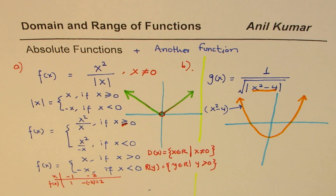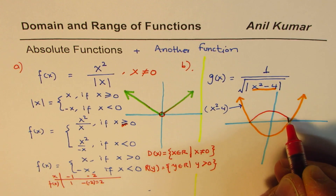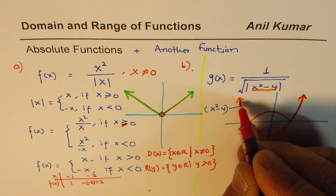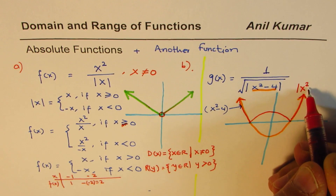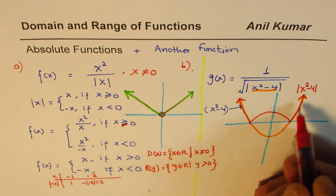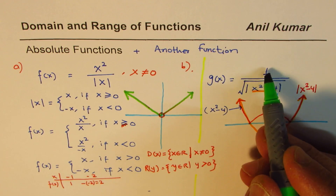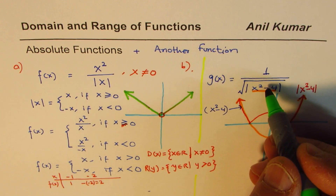Now, if I take the absolute value of this function, the negative part becomes positive. So the graph is reflected upward — this is the absolute value of x squared minus 4. It is always positive. The x-intercepts are at x = −2 and x = 2, and the vertex was at y = −4, which now appears at y = 4 after reflection.